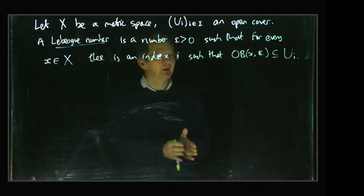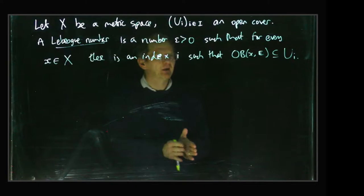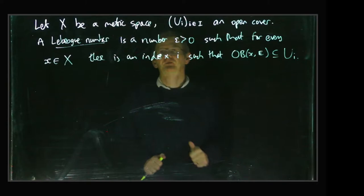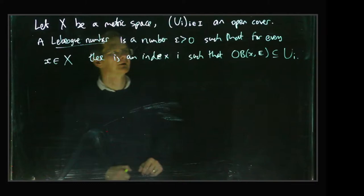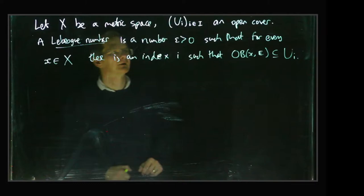It could be that the sets Ui are very big but they only just overlap a tiny amount in order to cover the whole space, and if that's the case then your Lebesgue number will be very small. But if the sets Ui are only moderately big but they overlap each other a great deal, then your Lebesgue number will be a bit larger.